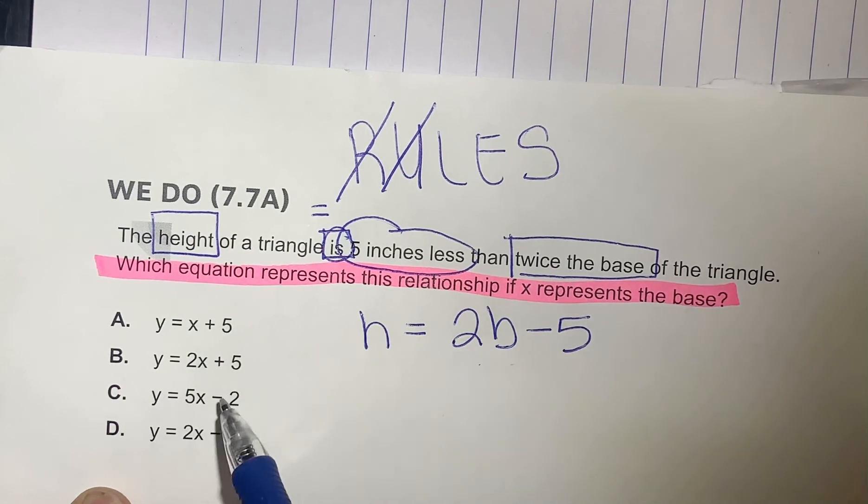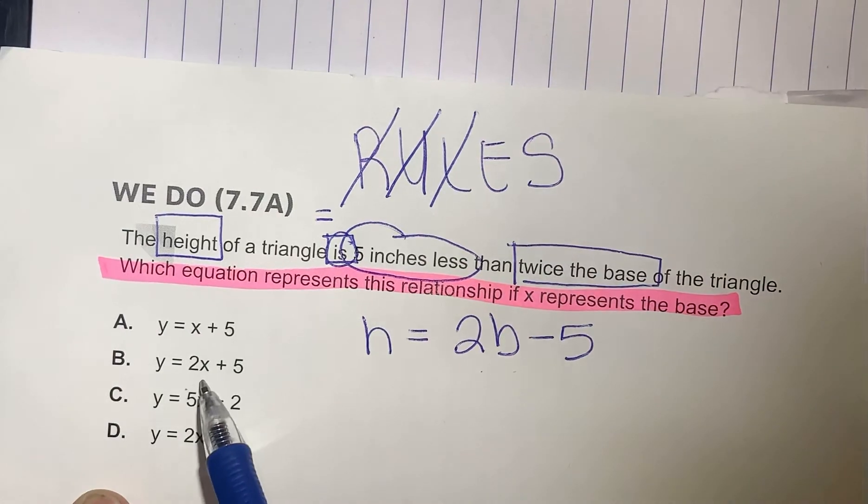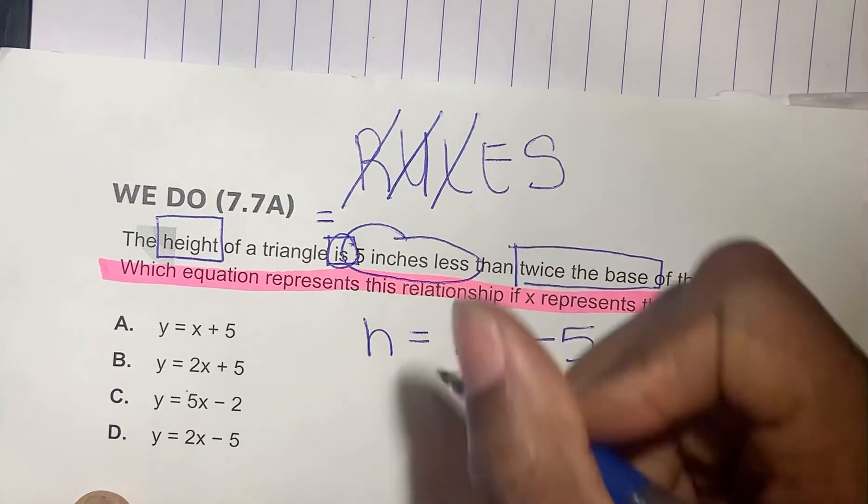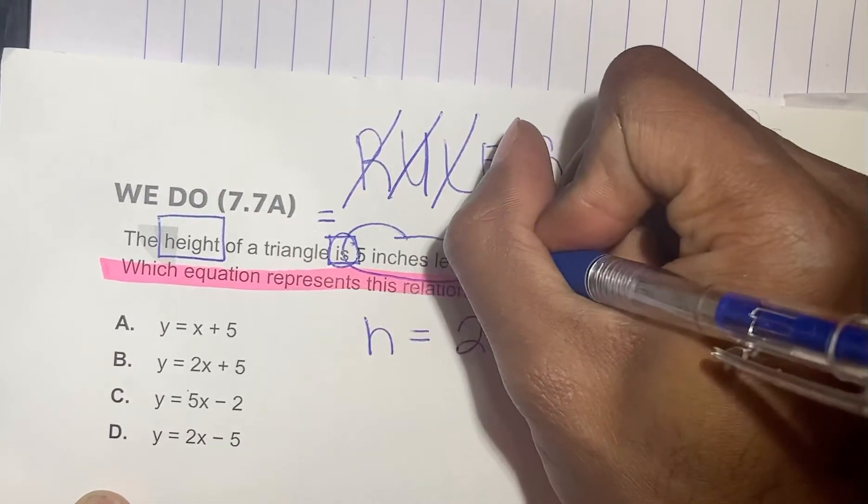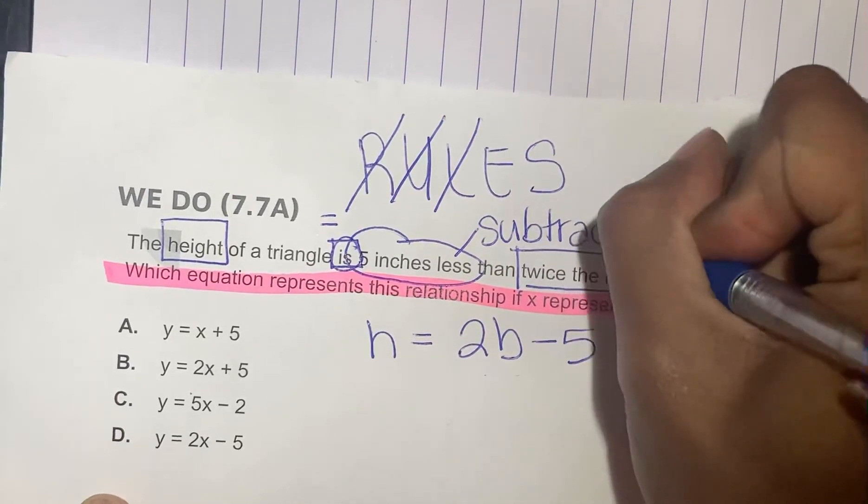All right, let's look at which one of these problems is similar to this equation I wrote here. So 2x plus 5. When it says less, this means that we're going to subtract. So it cannot be B.